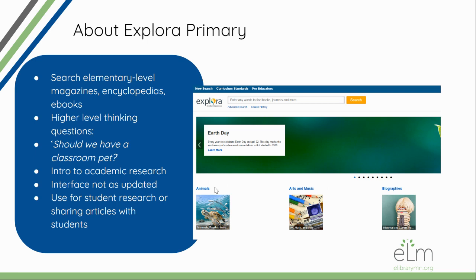EBSCO's Explora Primary is a repository of elementary level magazines, encyclopedias, ebooks, and research articles. It's really starting to introduce higher level thinking to your students. So instead of researching something simple like dogs or cats, you can start researching questions like should we have a classroom pet? It is their introduction to academic research. The interface isn't maybe as updated as they're used to seeing — it's not super jazzy — but the heart of the content is really what we want. It's research-based articles for them to start doing some critical thinking and balanced research on different perspectives.